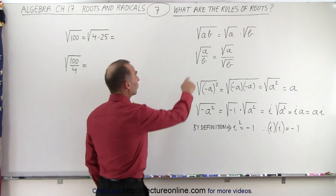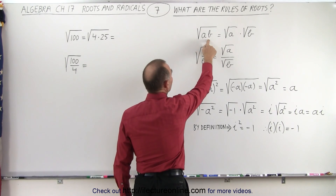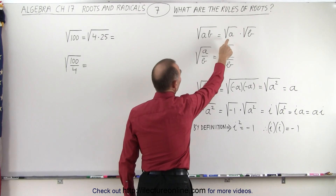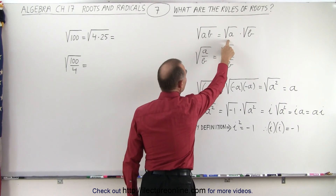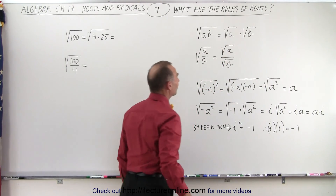Let's say we have the square root of a product, A times B. Well, that can be written as the square root of A times the square root of B.